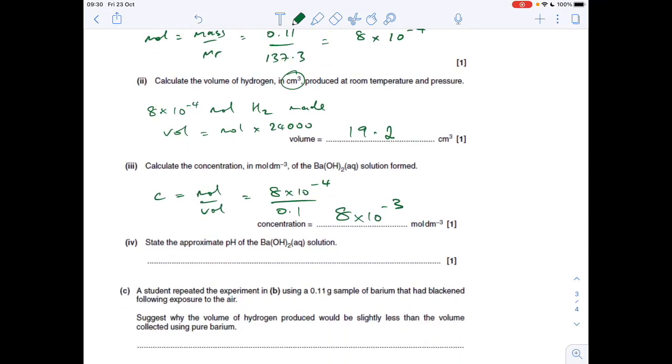Next part, the approximate pH of the barium hydroxide solution. Well, group two hydroxides are alkaline. So basically, the mark scheme would allow anything in the alkaline range. So eight to 14 would be okay. Now technically, the hydroxides get more alkaline as you go down the group. So I would probably go closer to the 14, maybe about 12, let's say. Well basically, anything in that region would be fine. You don't have to specify 12.